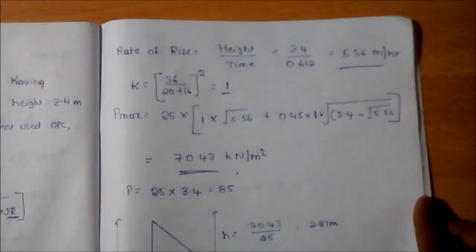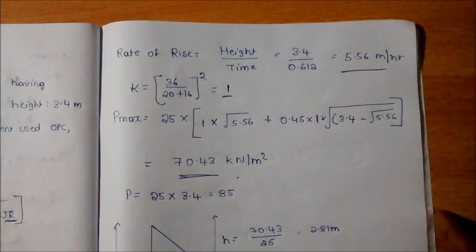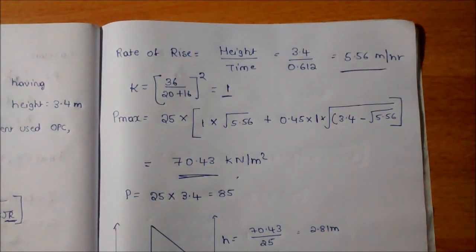So the rate of rise is given by height by time. We know the height of element is 3.4 and the time taken is 0.612 hours, so the rate of rise is 5.56 meters per hour. We have to determine the K value: K equals 36 by T plus 16, whole squared. Here T is 20, so we get the K value as 1.